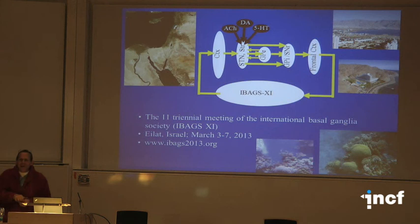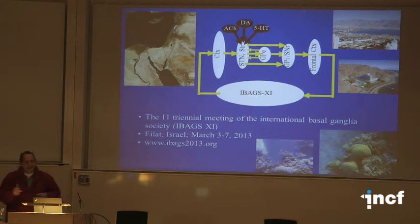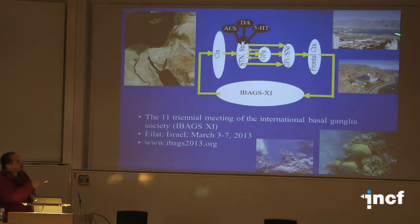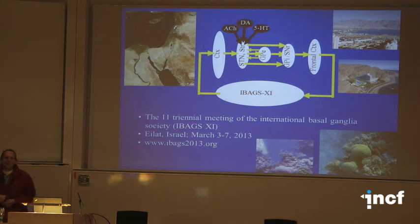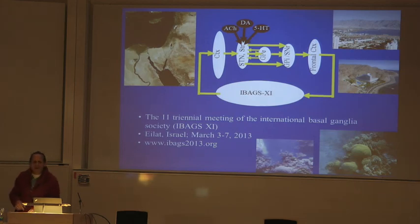If you are interested to hear more about the basal ganglia, next March we'll have the International Basal Ganglia 11 meeting in Eilat. The temperature in Eilat in March is 25 degrees and above, the sea is blue, and there are only five days of rain all year. I promise you a lot of dopaminergic spritz if you come to this meeting. Thank you very much.